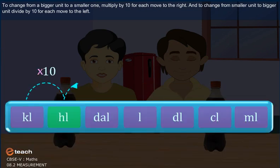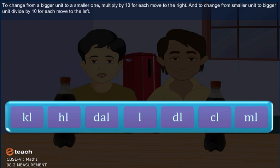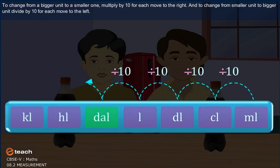To change from a bigger unit to a smaller one, multiply by 10 for each move to the right, and to change from the smaller unit to the bigger unit, divide by 10 for each move to the left.